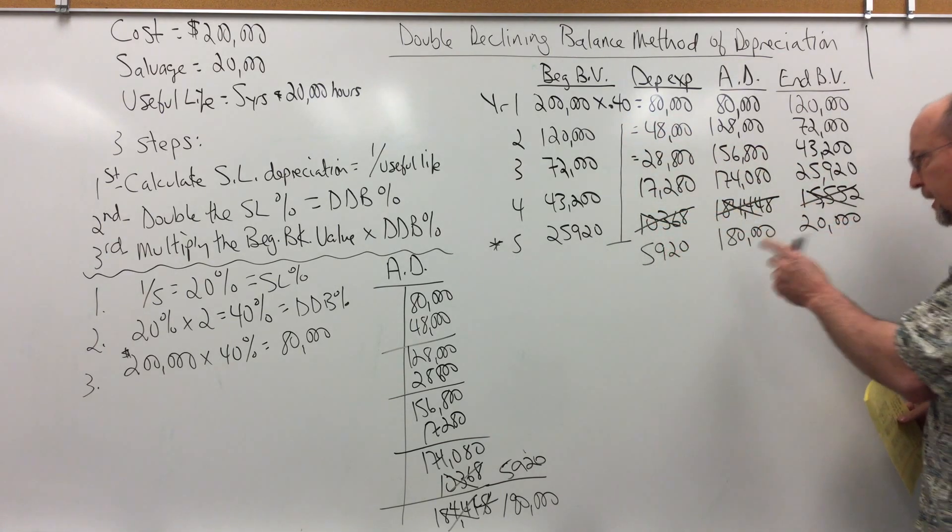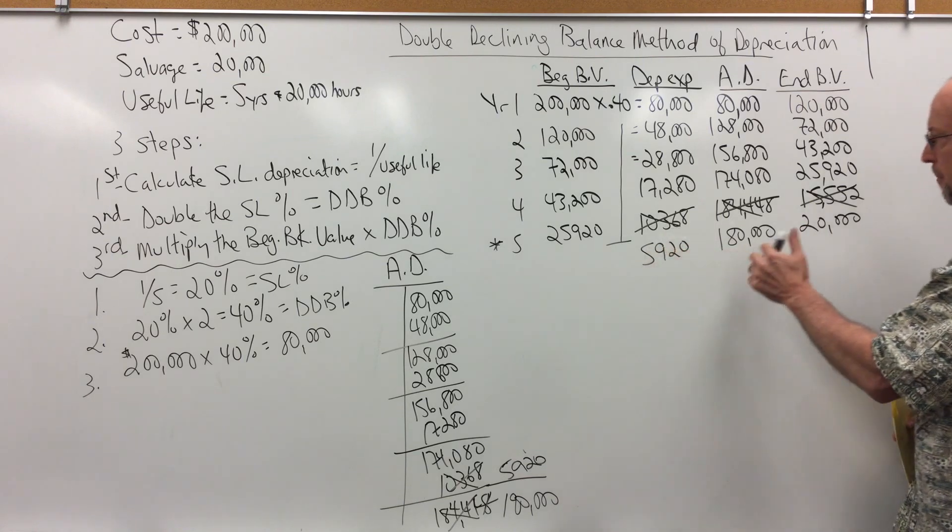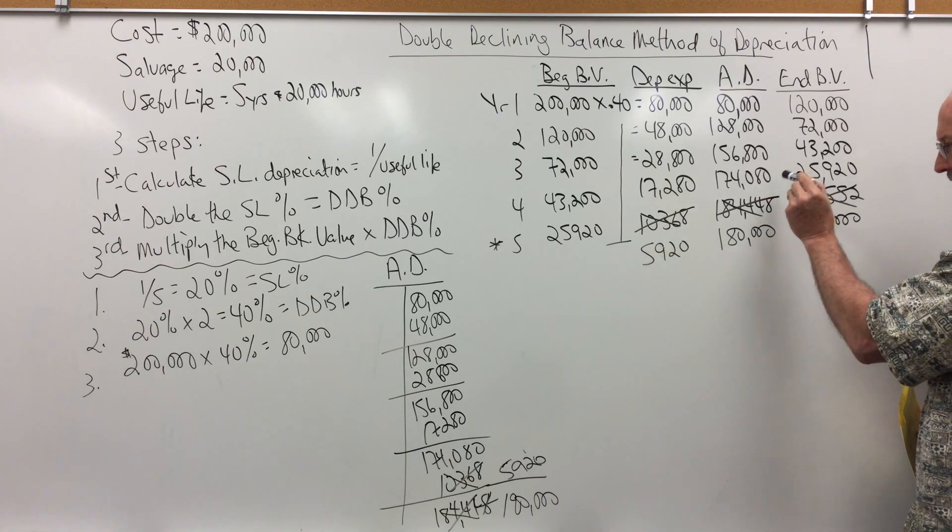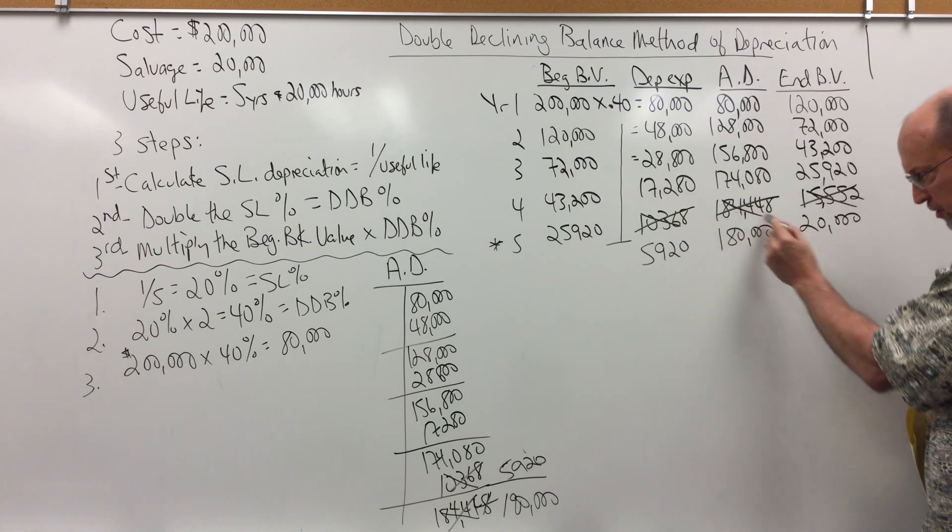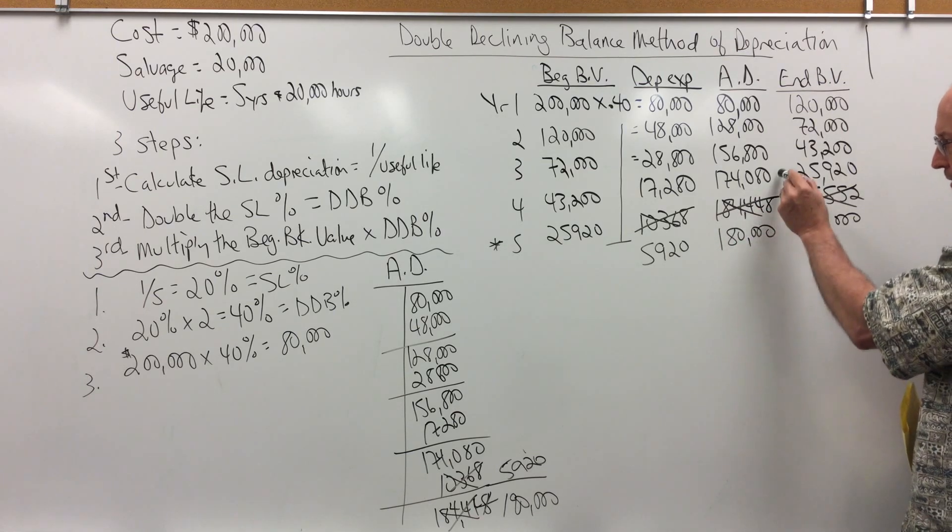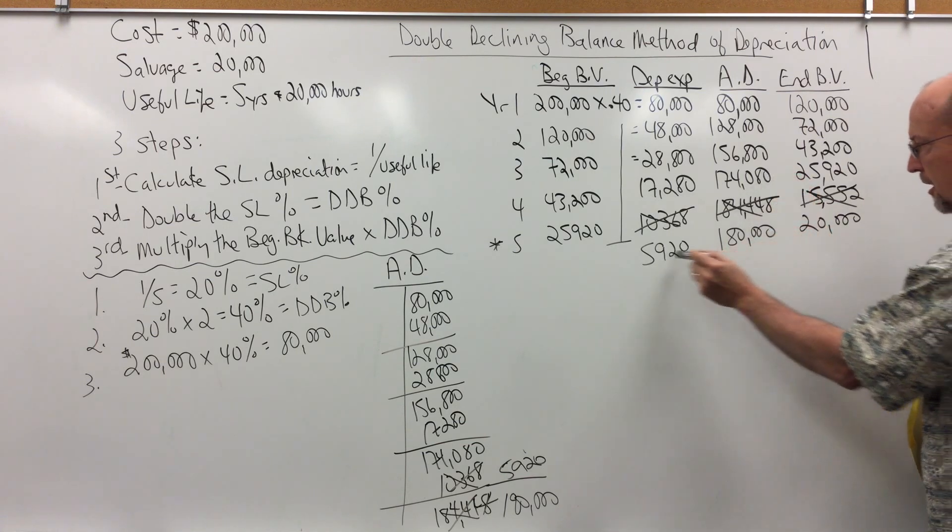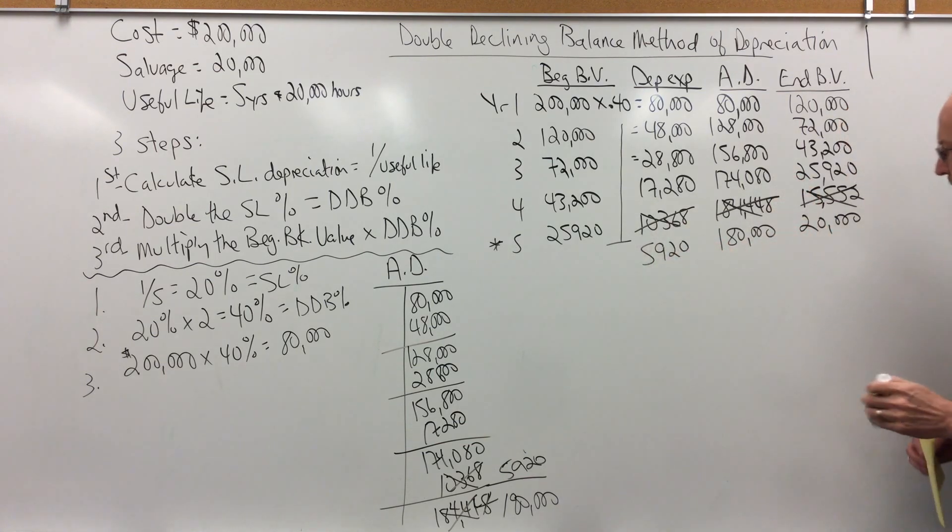We have to figure out what this number is by comparing last year's ending accumulated and what ending accumulated for this year is, considering that it cannot exceed 180. The difference between these two numbers would give us the 5,920. We could also say the difference between ending book value in year four and ending book value in year five, notice the difference is 5,920.